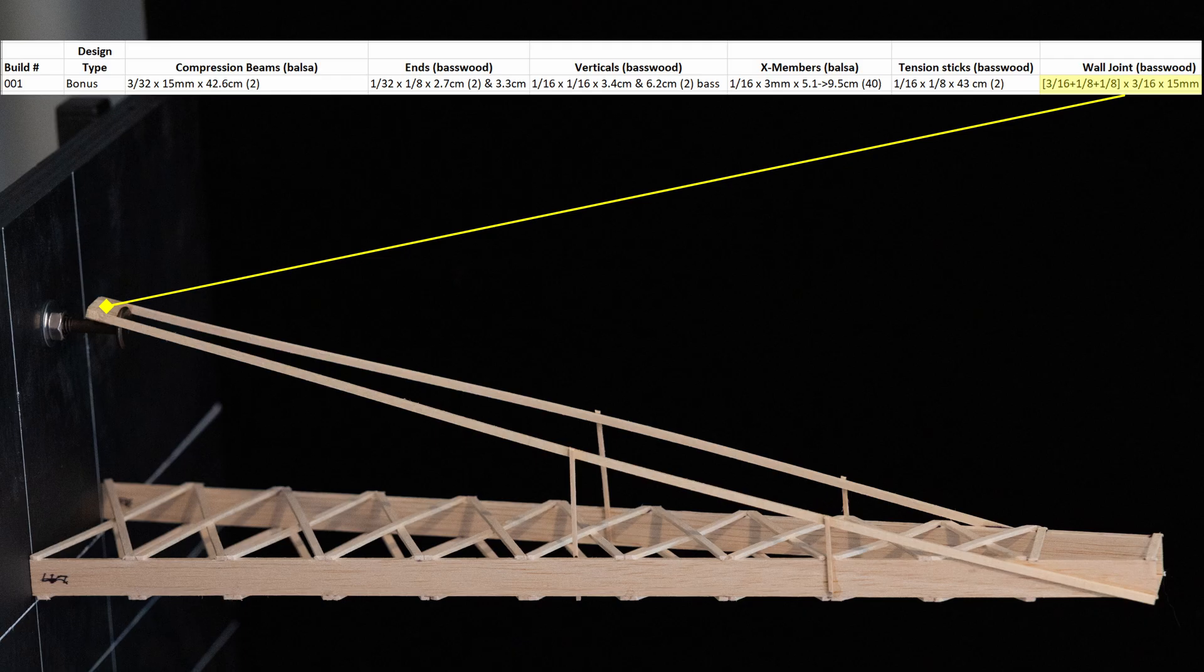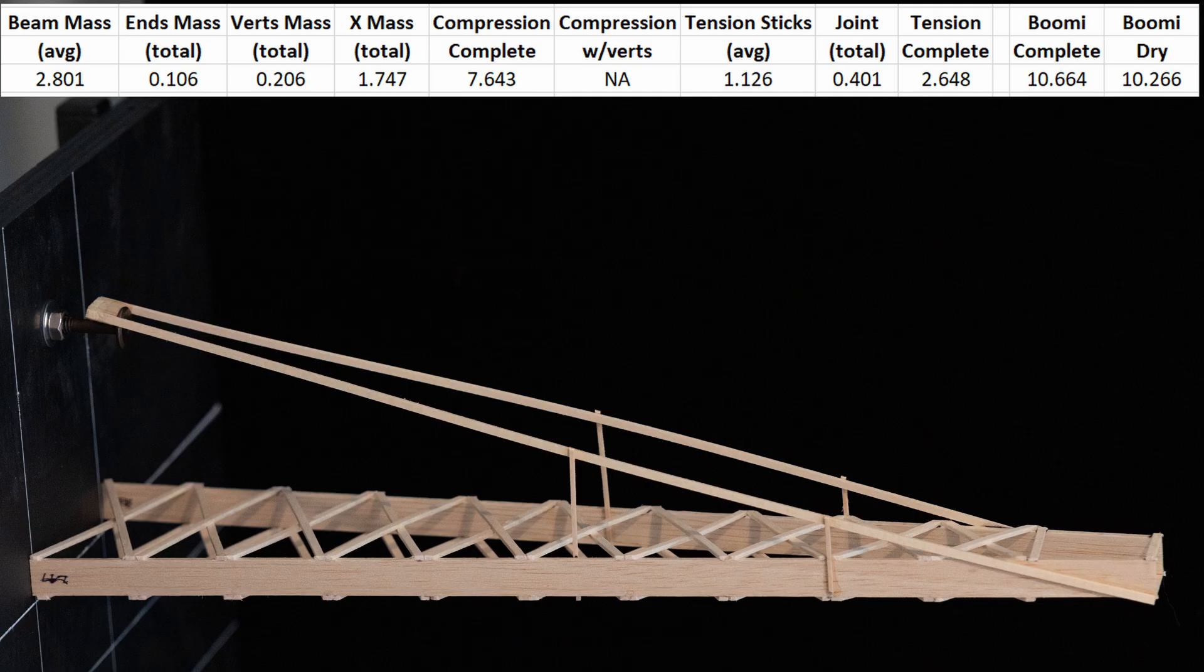The wall joint was made from combining a 3/16 by 3/16 piece of basswood with two 1/8 by 3/16 pieces all cut to 15 mm. Here you can see the total mass of all the different components if you'd like to take a closer look and study the details. The completed Boomi after coming out of my dry box weighed 10.266 grams, so very much in line with my initial mass target. Let's see how this one did during testing and what we can learn from how it failed.